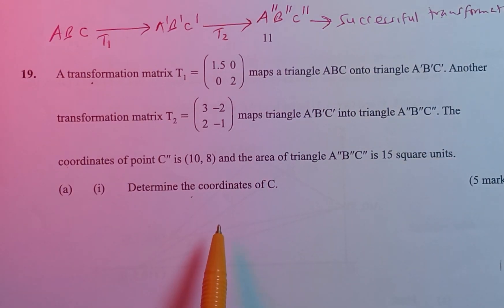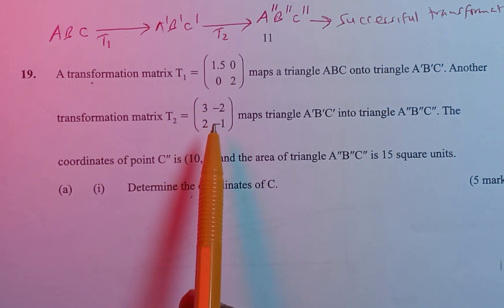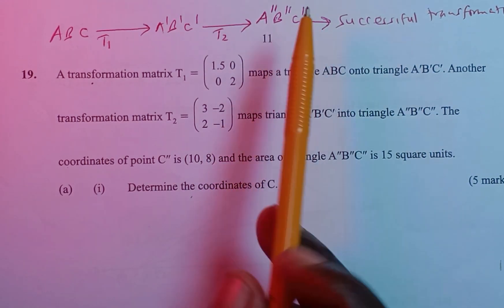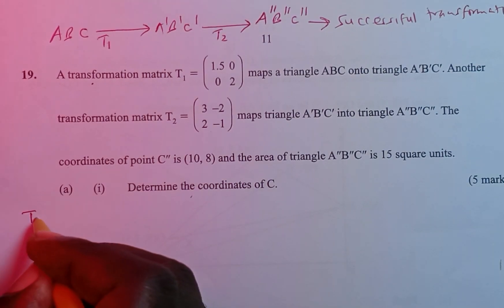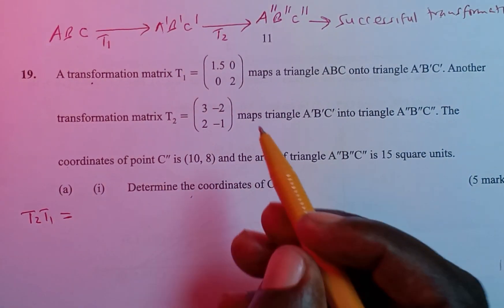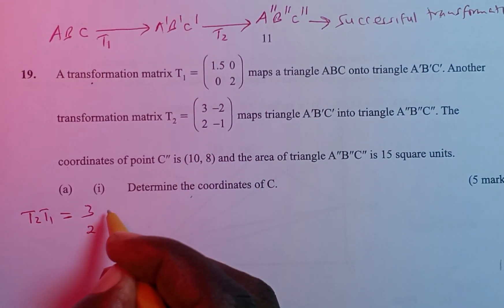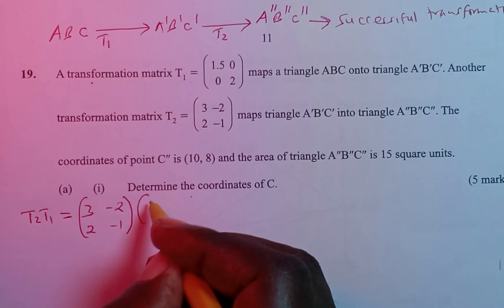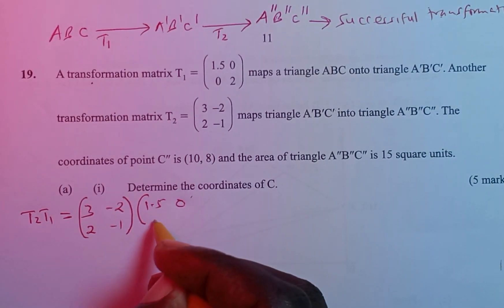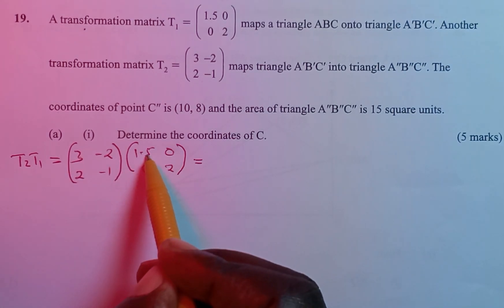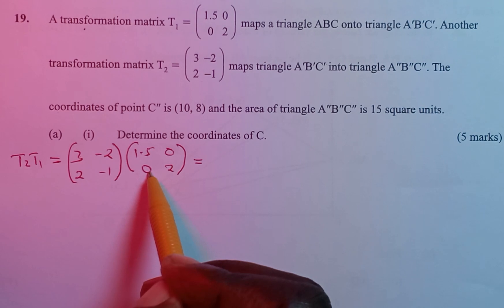In successive transformation, the first thing a student must do is combine the two transformations to get one single transformation that maps triangle ABC directly onto A''B''C''. You take the second transformation matrix and multiply by the first one. So T2 × T1 gives us: (3, -2, 2, -1) multiplied by (1.5, 0, 0, 2). The first row first column: 3×1.5 + (−2)×0 = 4.5. First row second column: 3×0 + (−2)×2 = −4.